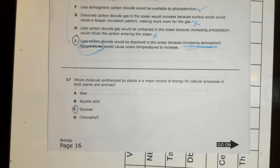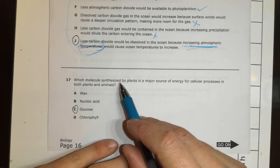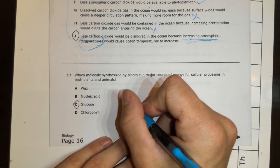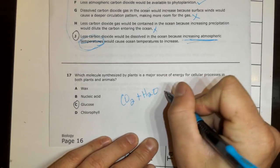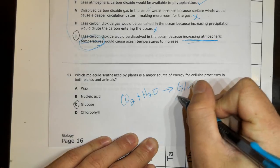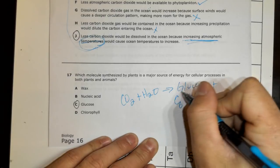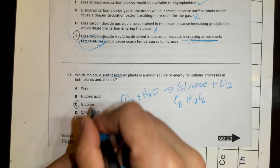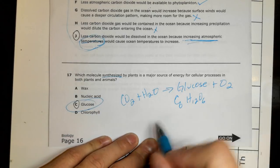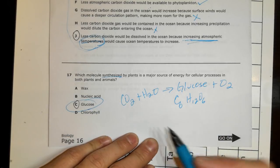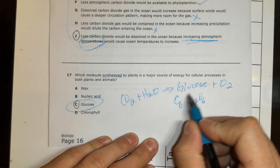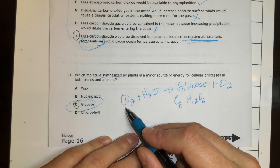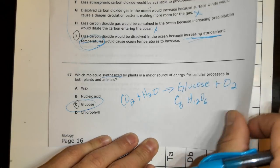Seventeen. Which molecule synthesized by plants is a major source of energy in cellular processes in both plants and animals? We know molecules synthesized by plants. Let's go back to the photosynthesis equation. We have carbon dioxide plus water and we produce what's called glucose, C6H12O6, and those plants also make oxygen. Which one is synthesized? Synthesized means made. The only one that's made is glucose. If you know this reaction, you should get every cellular respiration and photosynthesis question right. Remember, cellular respiration is the reverse. Humans eat sugar, breathe in oxygen, make carbon dioxide for the plants, and breathe out water vapor.